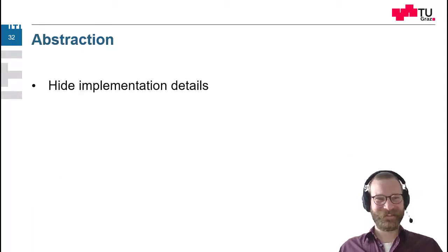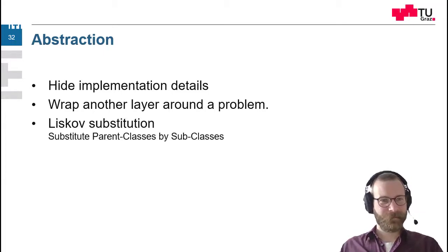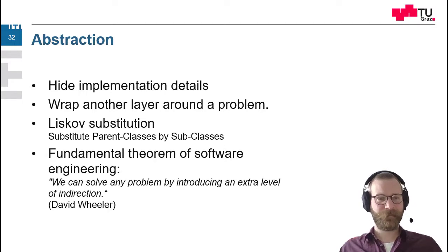Abstraction. So we want to hide away the implementation details. Of course, we can always wrap around another layer around the problem. So these two things make it easier to solve the problem and to see how the problem works. Also, Liskov's substitution is a kind of abstraction. So we can substitute subclasses into their parent classes or their parent interfaces. Actually, we only have to work then with the parent interfaces and we don't have to know the detailed subclasses at all.